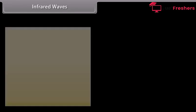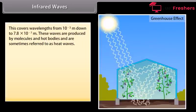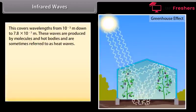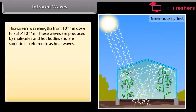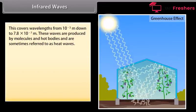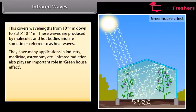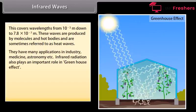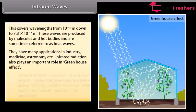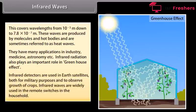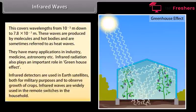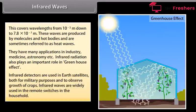Infrared waves cover wavelengths from 10⁻³ m down to 7.8 × 10⁻⁷ m. These waves are produced by molecules and hot bodies and are sometimes referred to as heat waves. They have many applications in industry, medicine, and astronomy. Infrared radiation plays an important role in the greenhouse effect. Infrared detectors are used in earth satellites for military purposes and to observe the growth of crops. Infrared waves are widely used in remote switches in the household.